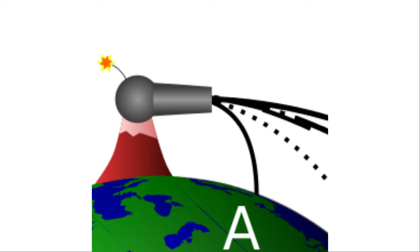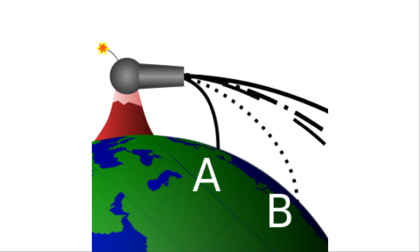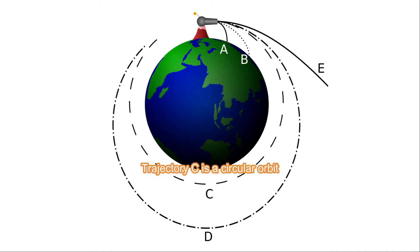Eventually, some distance away, the cannonball hits the ground. If we fire it farther and faster, the ground begins to curve away from the ball, but the ball eventually hits the ground anyway. If we fire it fast enough, the ground curves away from the ball at the same rate that gravity pulls it down, so the ball never falls back to the ground. The ball has now reached orbit.